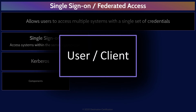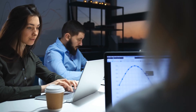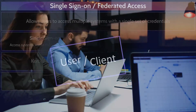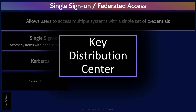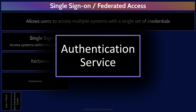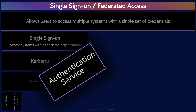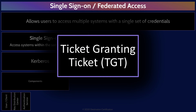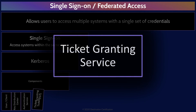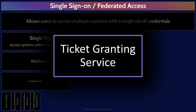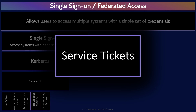The first component — or rather person — is the user or client. This is the individual that would like to gain access to a service through Kerberos. Kerberos provides two major services: the authentication service and the ticket-granting service, both of which are contained within what is known as the Key Distribution Centre, the KDC. The authentication service issues ticket-granting tickets. The ticket-granting ticket is then passed to the ticket-granting service, the other component within the KDC, which issues service tickets. The service ticket is what the user sends to the service — the application — in order to get access.